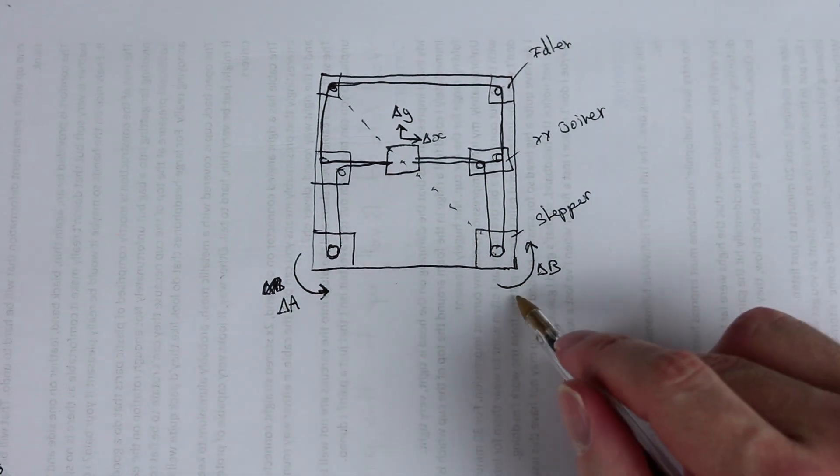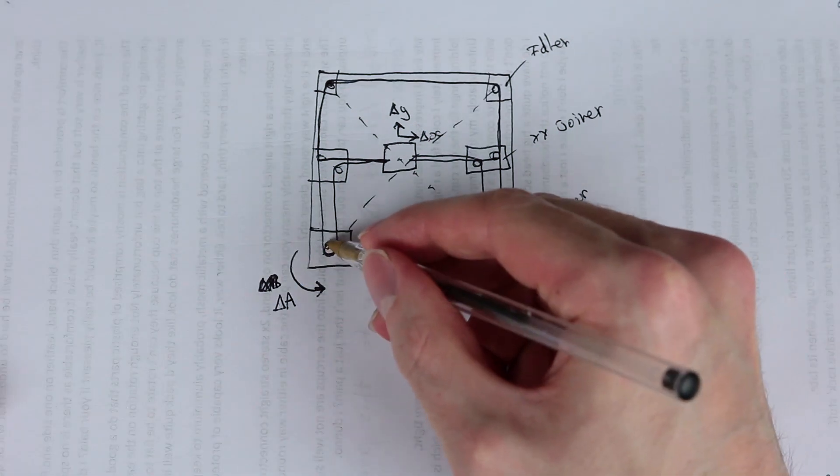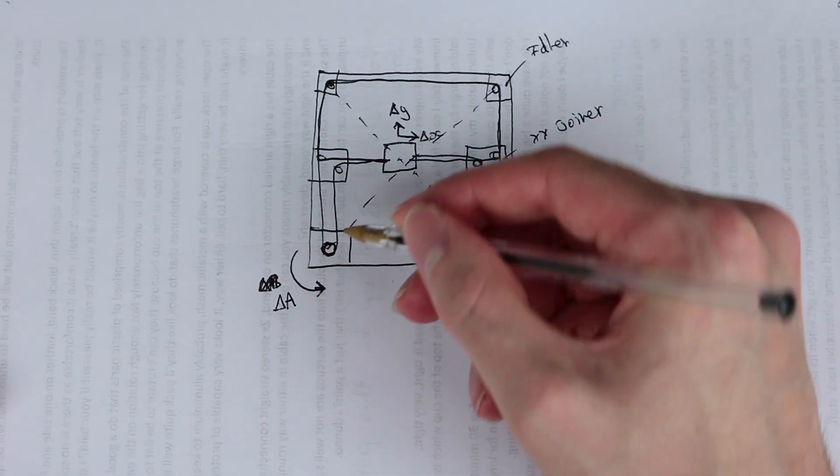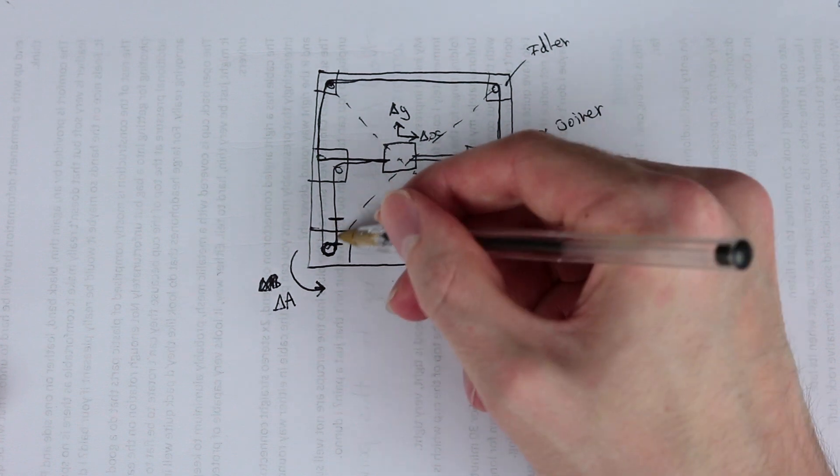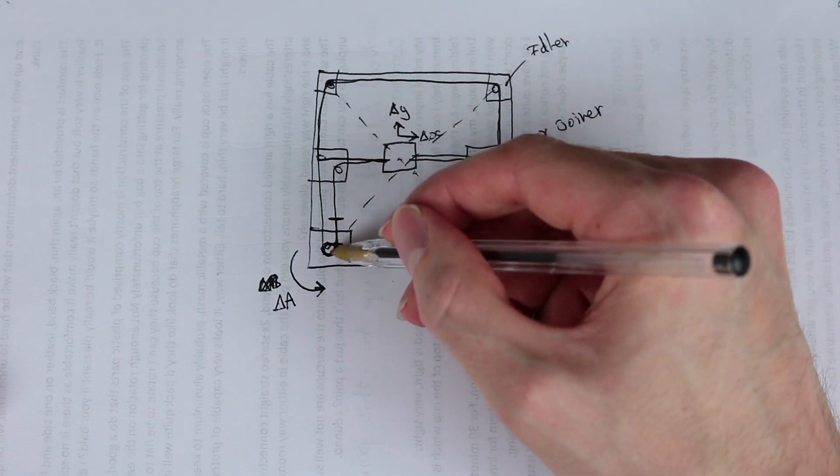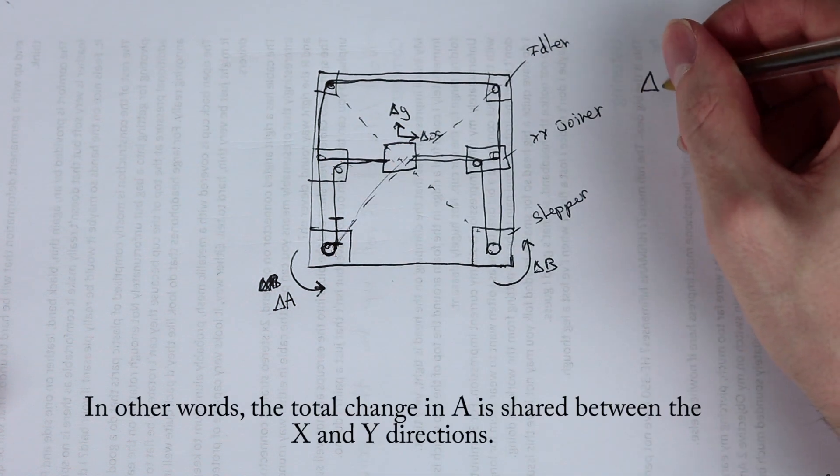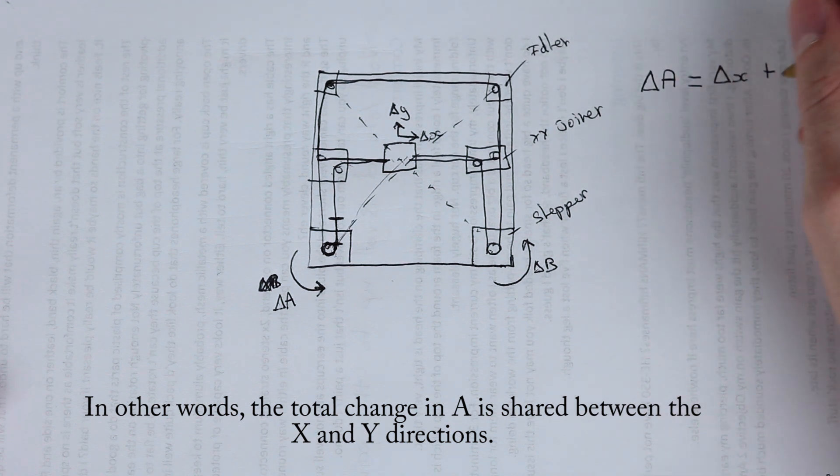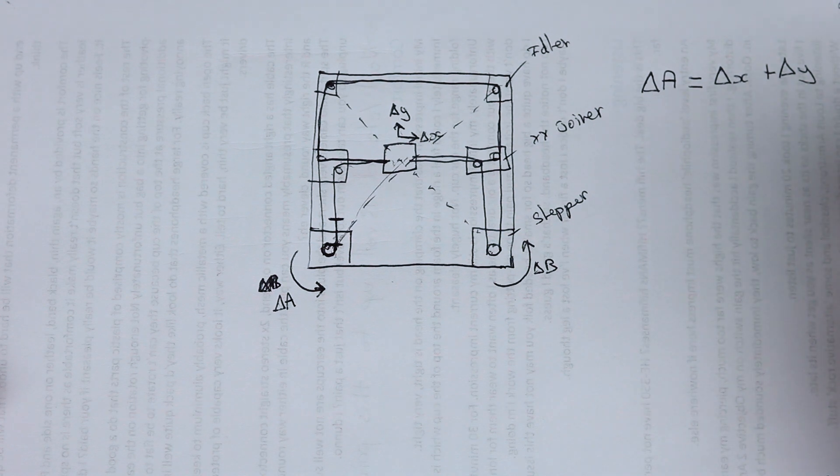So how does these change in A and B result in a change in direction of Y and X? A delta A, so a rotation here, will have a change in this length of belt. Let's say to here. Changes by that amount. So that means the distance from there to there has changed by that amount. So basically we have a change in A equals a change in X and a change in Y. The delta A will be the delta X and the delta Y together.